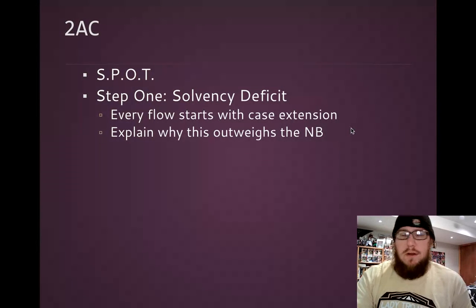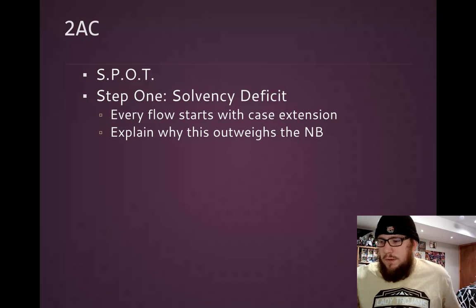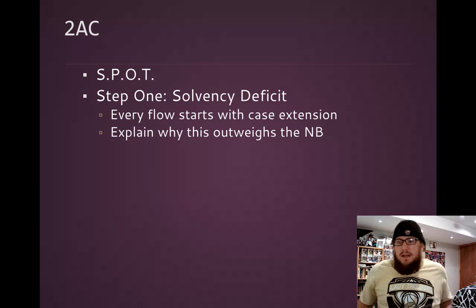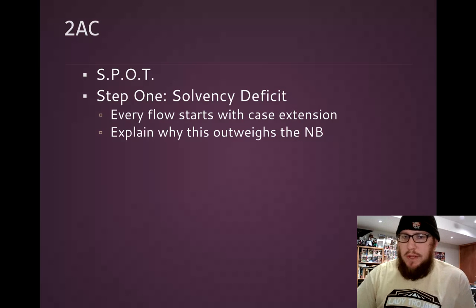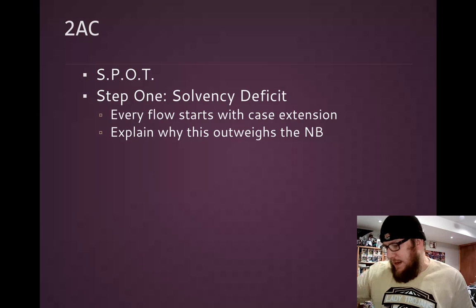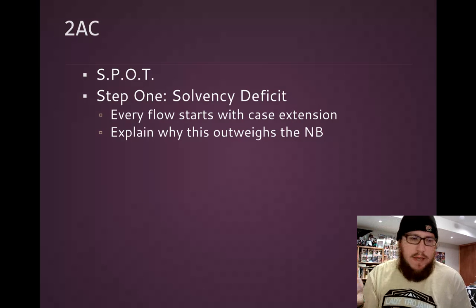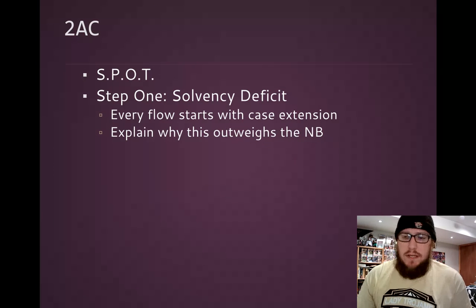Second is where you start comparing the case and its advantages, or the affirmative and its harms, to the world of the counterplan and the net benefit. The net benefit is the disadvantage that the counterplan avoids or a specific advantage to the counterplan. This is where you need to explain why not solving the case outweighs the impact of the net benefit. This puts the affirmative back in the forefront — if the affirmative wins that they create a necessary and meaningful change to the status quo, then that's a reason why you ought to vote affirmative. And if the impacts of the affirmative outweigh the impacts of the net benefit, then it's most definitely a reason why the judge should vote affirmative when it's the plan versus the counterplan.